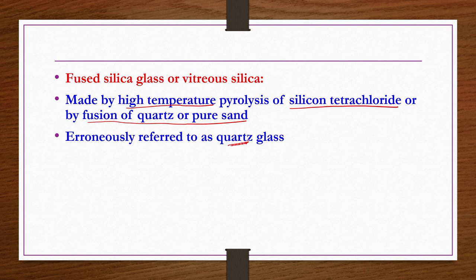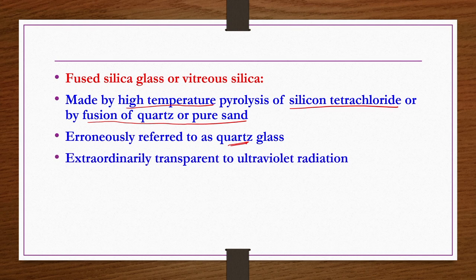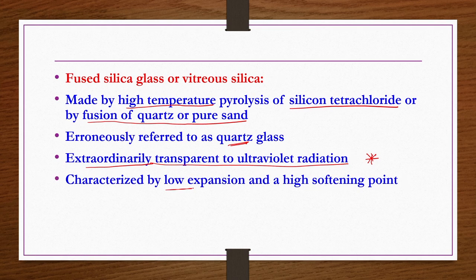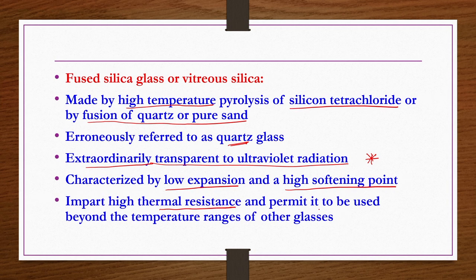Fused silica is characterized by extraordinary transparency to ultraviolet radiation, low expansion, and a high softening point. It imparts high thermal resistance and is permitted to be used beyond the temperature ranges of other glasses. Some glasses can be used up to 500 or 600 degrees centigrade, but fused silica glass allows the highest possible temperature of operation.